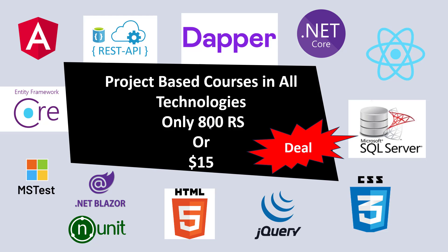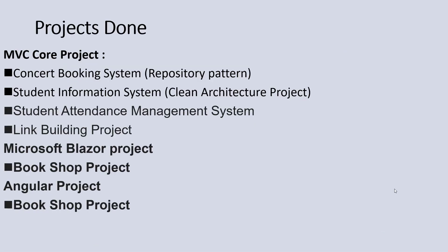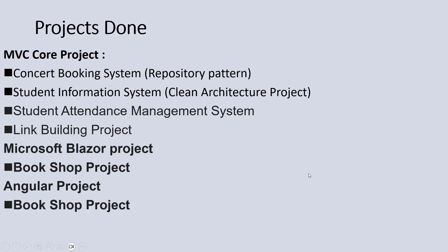Let me share the course structure. In .NET Core, first I will provide an MVC Core project — a Concert Booking System based on the Repository Pattern with complete video tutorials. The next project is a Student Information System, which is a Clean Architecture-based project. Then a Student Attendance Management System and a Link Building project — these two include source code only, while Concert Booking and Student Information System include complete code and video tutorials.